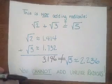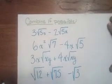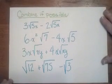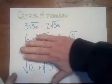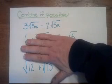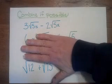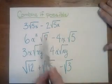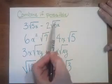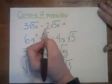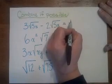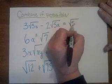However, let's do some examples. This is what your problems will say. Combine if possible. We look at the first one. We have 3 times the square root of 5x minus 2 times the square root of 5x. Are these like radicals? Well, we have both the square roots and they're both 5x. So yes. So I can combine. Then I take 3 minus 2 and I get 1 times the square root of 5x, or I don't need to put the 1 there. I can just say the square root of 5x.